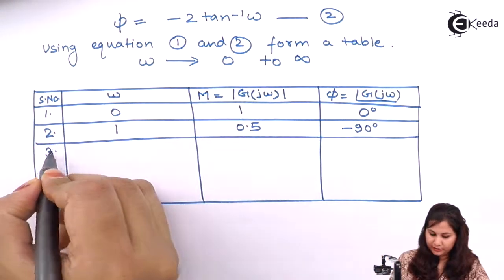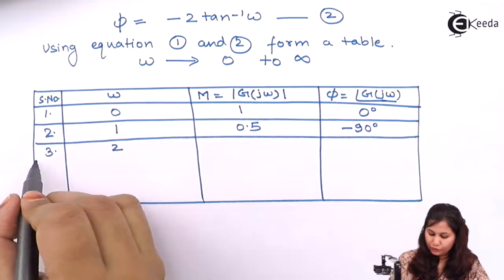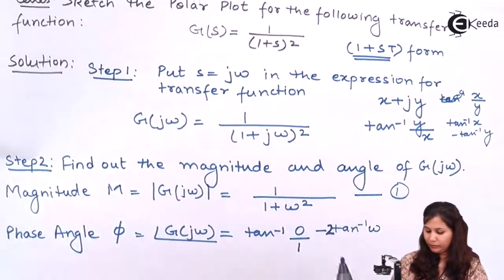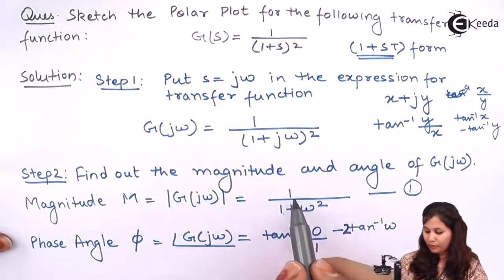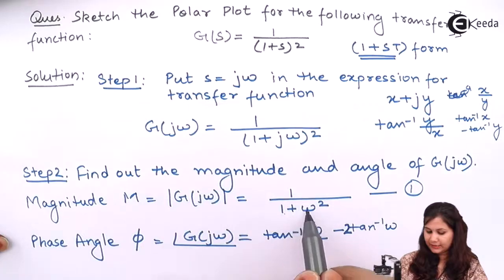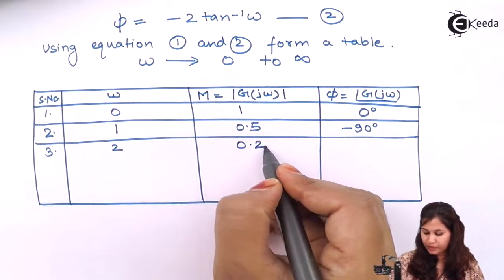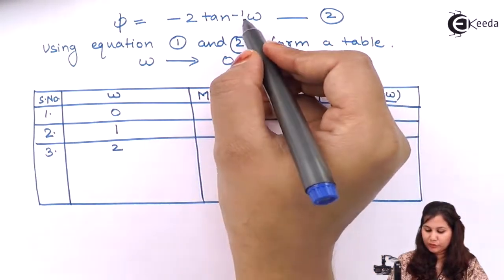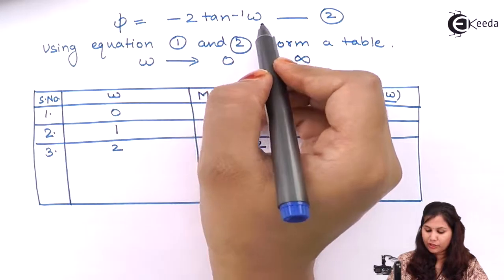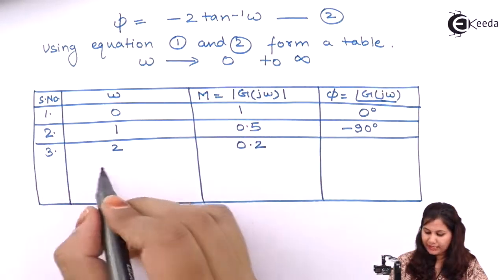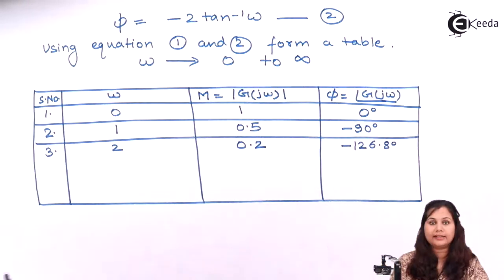Now take another value ω = 2. The magnitude will be 1 / (1 + 2²) = 1 / (1 + 4) = 1/5 = 0.2. For the phase angle, it will be −2·tan⁻¹(2), which comes out to be −126.8 degrees.